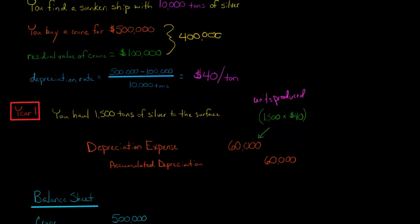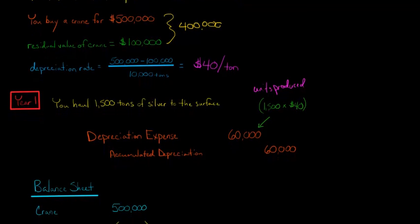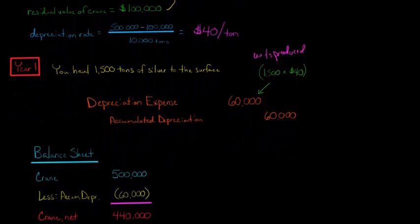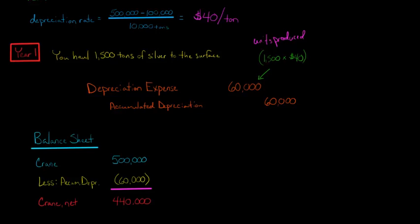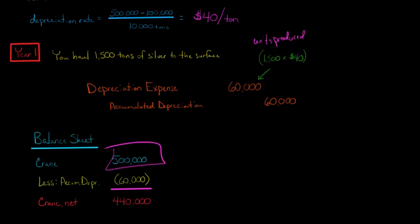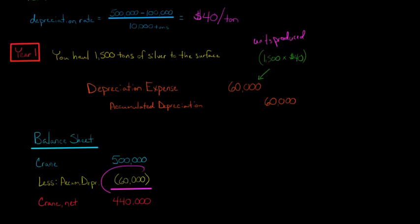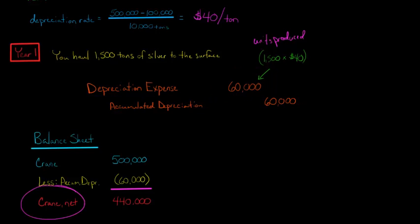That's our income statement effect — depreciation expense appears on the income statement. Looking at the balance sheet effect at the end of year one, we'd see the crane at $500,000 (the purchase cost), less accumulated depreciation of $60,000, giving a net book value of the crane of $440,000.